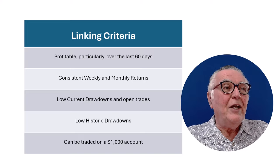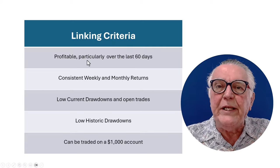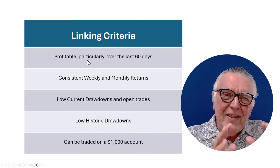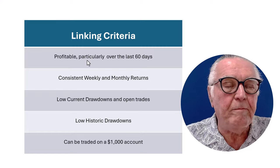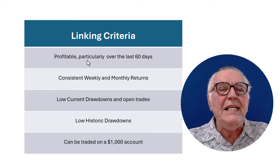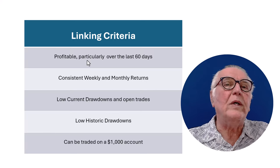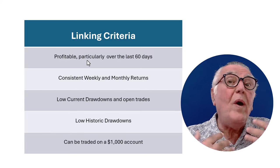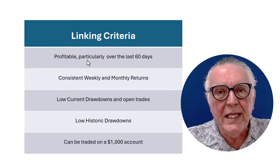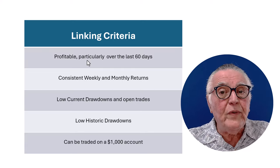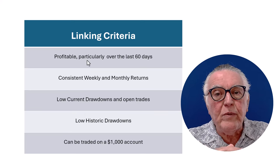I created some linking criteria. I want to link to profitable accounts, but they must be profitable in the last 60 days in particular. I'm looking for consistency — consistent weekly gains and consistent monthly gains — and I want low current drawdown. I don't want to go and enter into an account that already has a big drawdown.